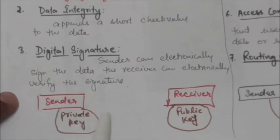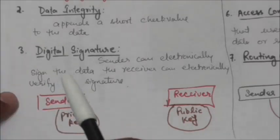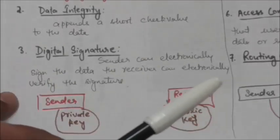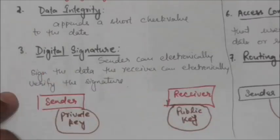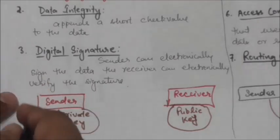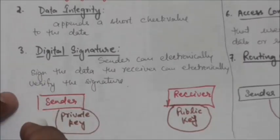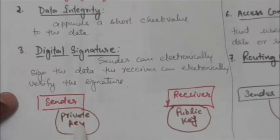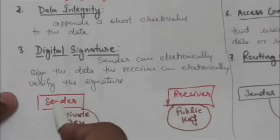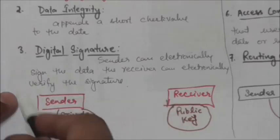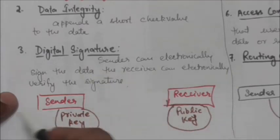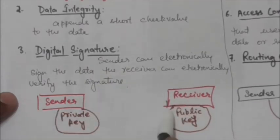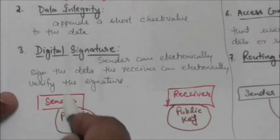The next mechanism is digital signature. By digital signature, the sender can electronically sign the data and the receiver can electronically verify the signature. The sender uses a process that involves proving that the sender owns a private key related to a public key which the sender has announced publicly. The receiver uses the sender's public key to prove that the message is indeed signed by the sender.